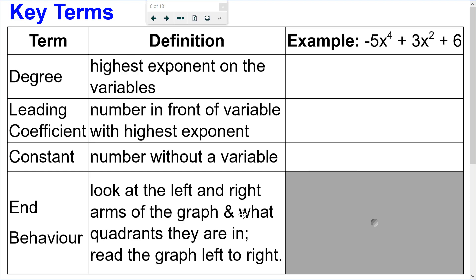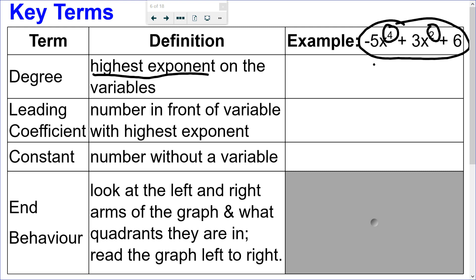Let's go through some key terms using the example negative 5x to the exponent of 4 plus 3x squared plus 6. The degree is the highest exponent of the variable — just look for the highest one out of all the x's. This has exponents of 4 and 2, so the degree is 4. The leading coefficient is the number in front of the variable with the highest exponent — that's negative 5. Include the sign. A constant is a number all by itself without a variable; here, including the sign, the constant is positive 6. If there is no constant, it would be 0.